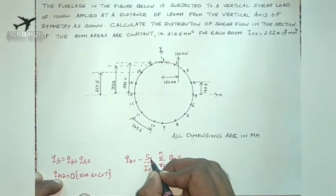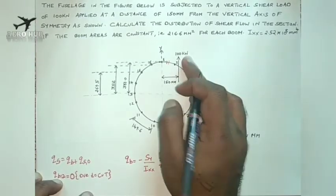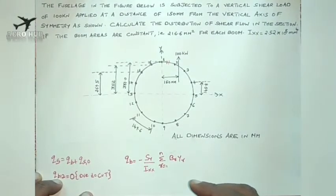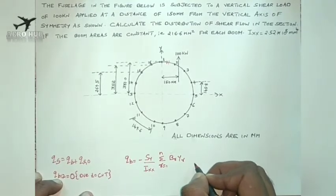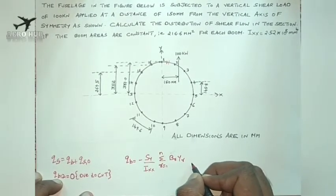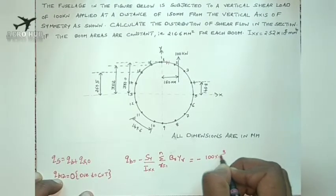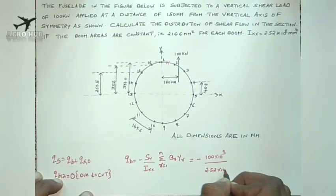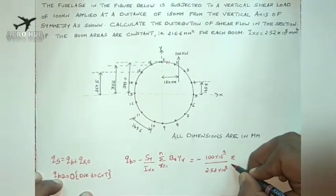I can apply the value of SY. SY is the shear force along the Y direction, that is 100 kN, and IXX is 2.52 into 10 power 8 mm power 4. I can apply these values to generate a constant equation throughout the analysis: minus of 100 into 10 power 3, divided by 2.52 into 10 power 8, into summation from R equals 1 to N of BR times YR.